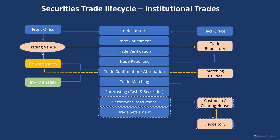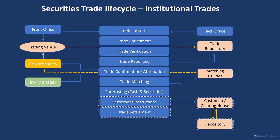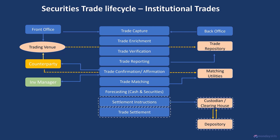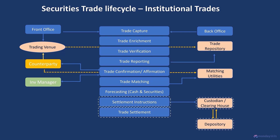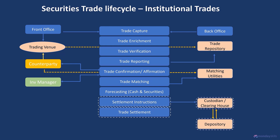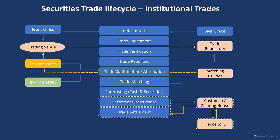These days, actual settlement takes place at the depository. On the settlement day, the depository will facilitate the exchange of securities and payment between buyers and sellers through the clearinghouse, which is now acting as the central counterparty to the trade. This settlement of securities and cash happens simultaneously and is termed delivery versus payment (DVP) settlement. The depository will transfer the ownership of securities from the seller to the buyer in its books, and the buyer's cash account with the custodian is debited with the settlement amount. The custodian will then inform the institutional investor of the completion of the trade settlement process.